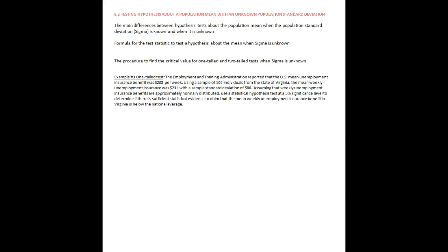That kind of tells you what the main difference is. When we have a known sigma, we're using our z-test. When we have an unknown sigma, meaning we only have an s — a sample standard deviation — that's when we're going to be using our t-test. The formula for the test statistic when sigma is unknown is just this formula right here.